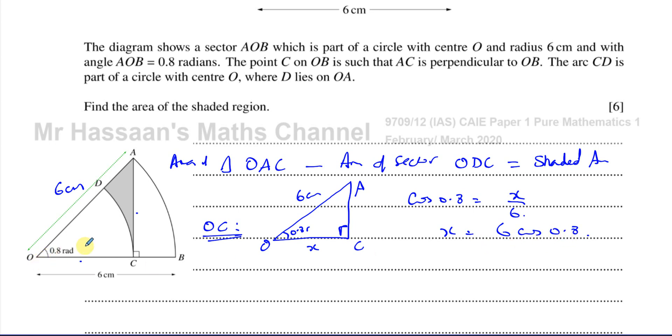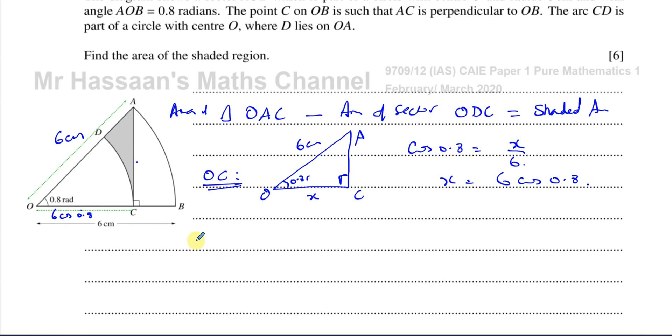So what I'm going to do is I'll leave it as 6 cosine 0.8 for now. That's the length of OC. We just found as 6 cosine 0.8, 6 times cosine of 0.8. So now we have enough information to answer the question.